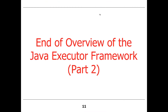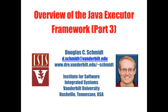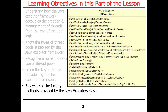That's a quick overview of the interfaces in the executor framework — we'll talk about a lot more detail shortly. This is part three of the executor framework overview. We're going to go over, quickly and then in more detail, some of the factory methods provided by the Java Executors class.